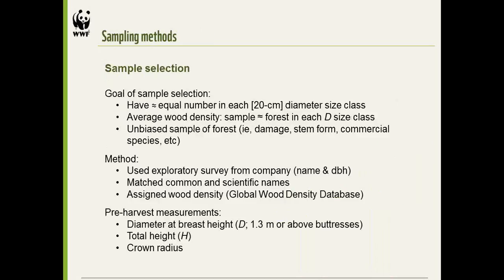For sample selection, I developed this myself with a thorough literature review. The goal I recommend is to have a roughly equal number of trees in each diameter size class — I used 20-centimeter classes, but you could use 10 or something else. The real crux of my sampling scheme is to use average wood density to make the average wood density of the sample about equal to that of the forest in each diameter size class. Within that framework, we need to get an unbiased sample of the forest — we basically ignore structural damage, stem form, and don't just collect commercial species above a certain diameter.